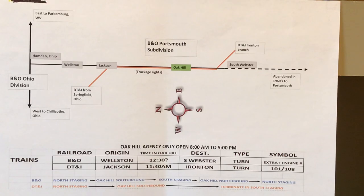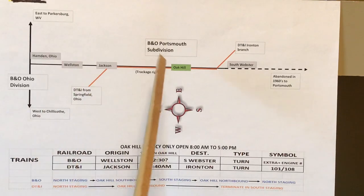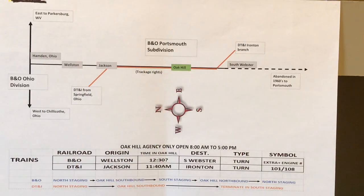I'm modeling around the year 1980, and the Portsmouth subdivision is where Oak Hill is at — the B&O Portsmouth subdivision. That was part of the Chessie system at that time.